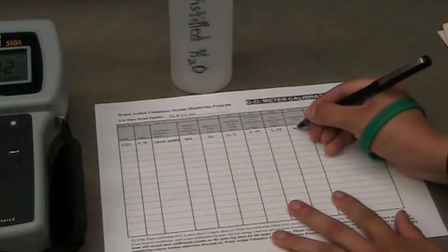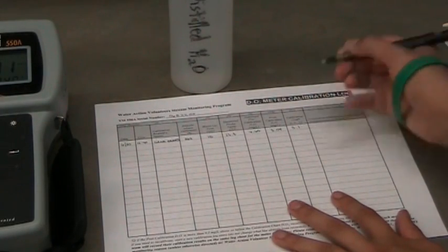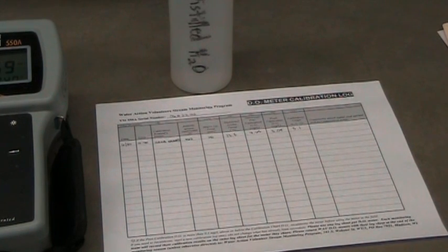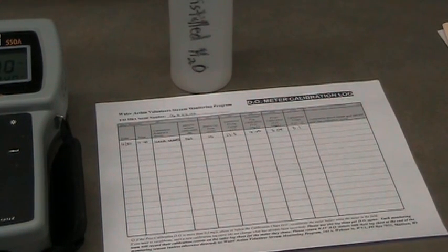If the difference between your calibrated value and the value on the chart is greater than 0.3 milligrams per liter, recalibrate the meter before use. Leave your meter on after calibration until you are finished collecting data for the day. If an error appears during the calibration process, see the video for changing the tip on the DO sensor. If calibration still does not work, contact your local WAVE coordinator.